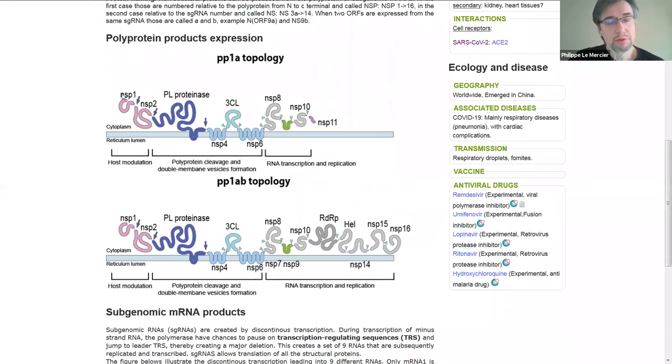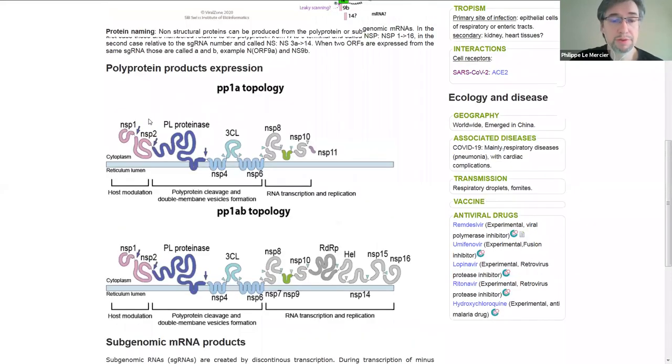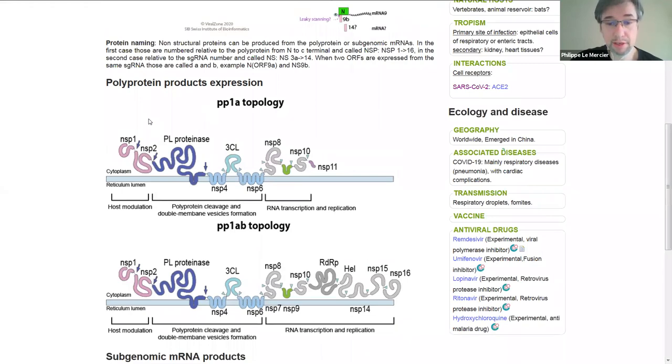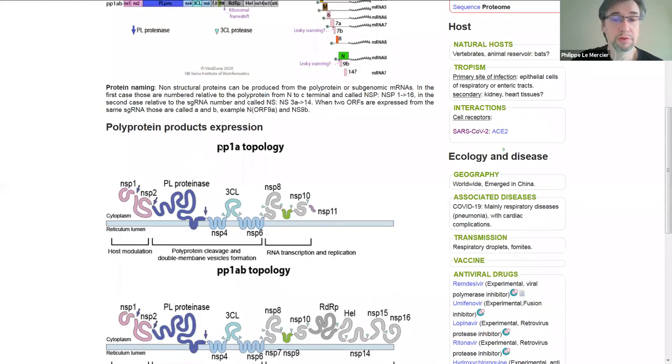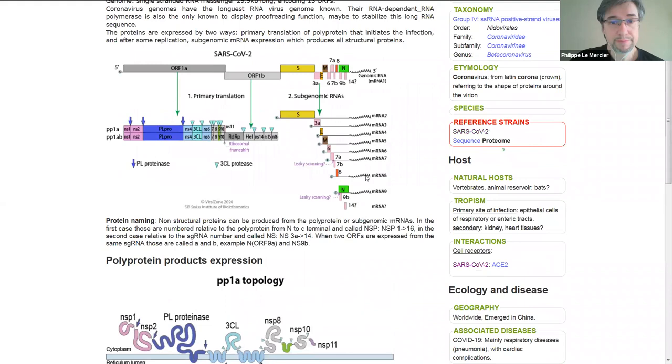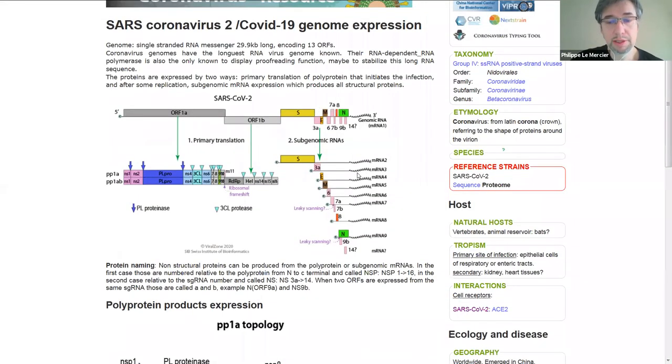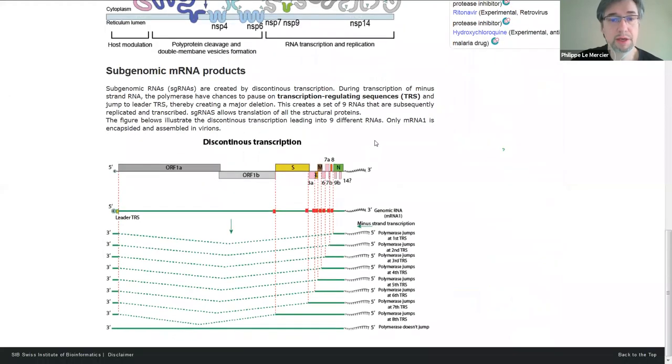Nsp1 is shutting off the translation system of the cell by inducing cellular messenger RNA degradation, but not the viral one. By doing so, the virus takes over the translation system for itself, and the cell cannot translate anymore. It also shuts off cell defense because cell defense relies on creating new messenger RNA for antiviral proteins. In the second part of the infection, the virus will produce subgenomic RNAs to translate all these open reading frames.